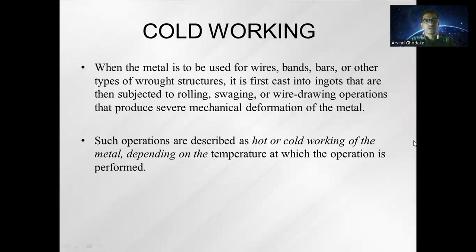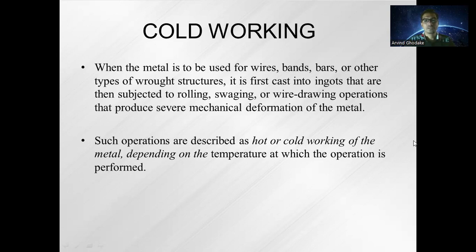Welcome to Materials Engineering and Metallurgy. Today we will discuss the cold working process. When metal is to be used for wires, bands, bars, or other types of rod structures, it is first cast into ingots that are then subjected to rolling, swaging, or wire drawing operations that produce severe mechanical deformation of the metal. Such operations are described as hot or cold working of the metal depending on the temperature at which the operation is performed.